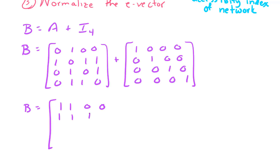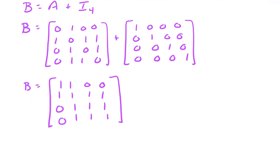Once we have matrix B, we can perform calculations by hand, but a better strategy — since some of these matrices can get pretty big — is to use MATLAB. We type in matrix A using square brackets, entering all the 0s and 1s and separating each row by a semicolon, which is how MATLAB knows we're ending a row. Then we get the 4 by 4 identity matrix in MATLAB using the command EYE(4), and add it to A to get matrix B.